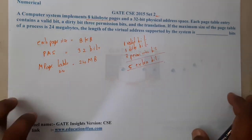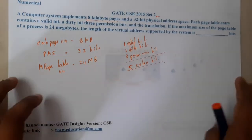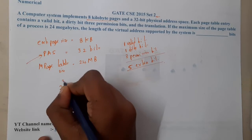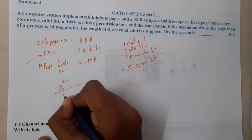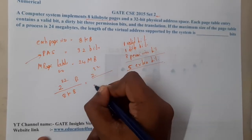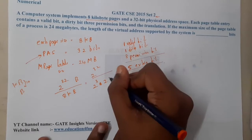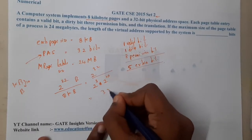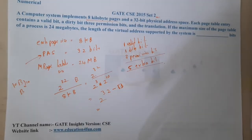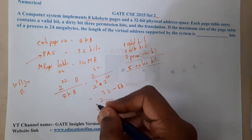First, let us calculate how many entries are there in the page table. The physical address space is 32 bits, so the number of frames is 2^32 divided by 8 KB, which is 2^32 divided by 2^13, giving us 2^19. So there are 2^19 entries.